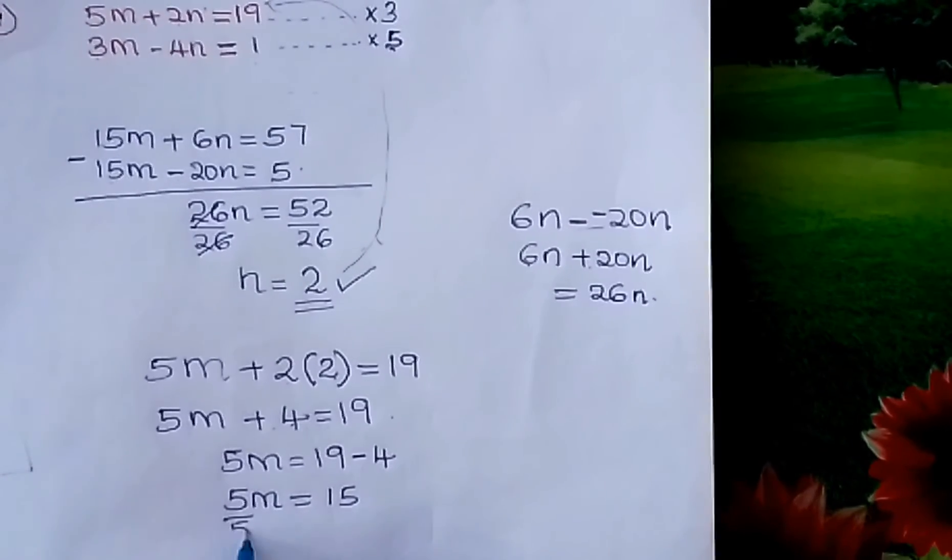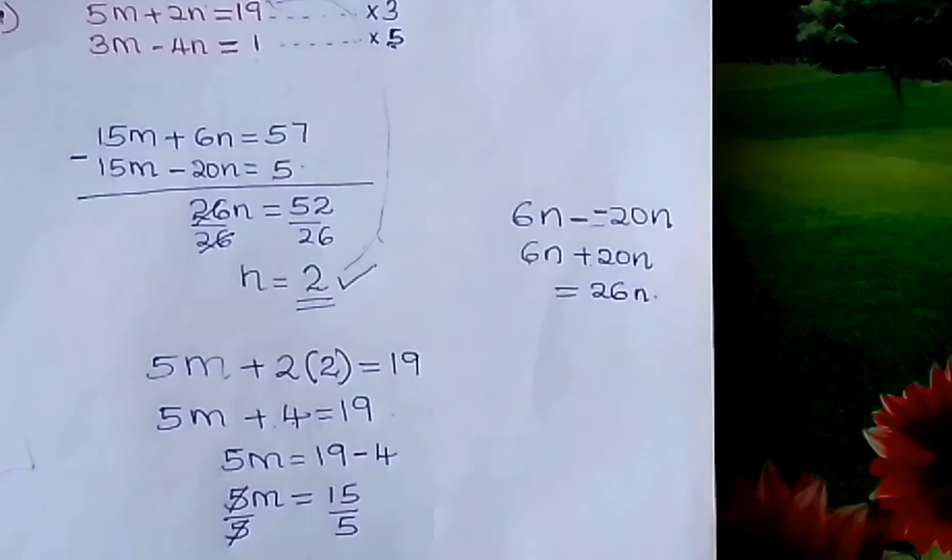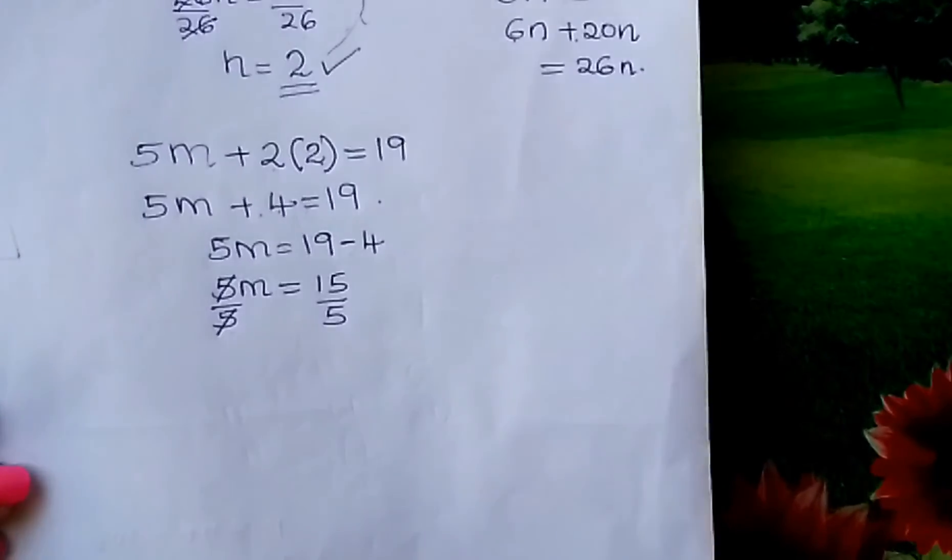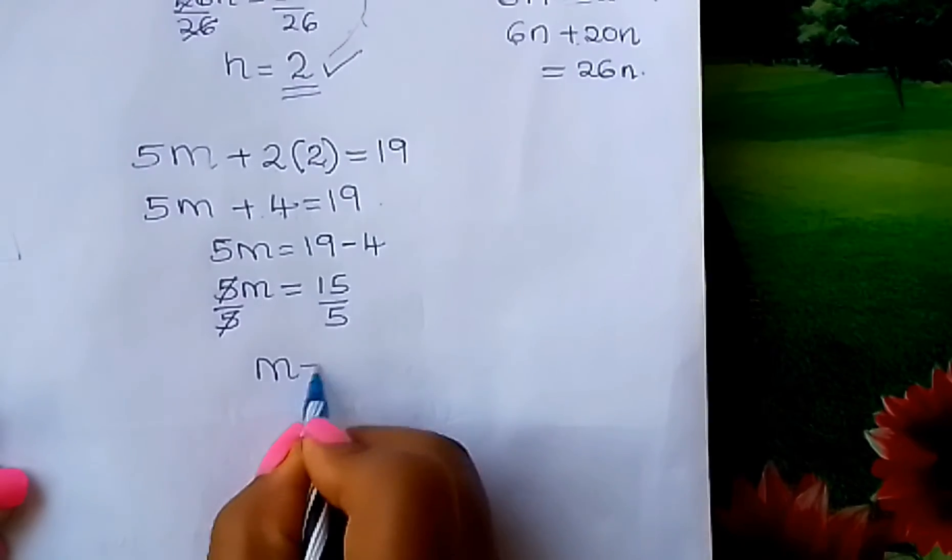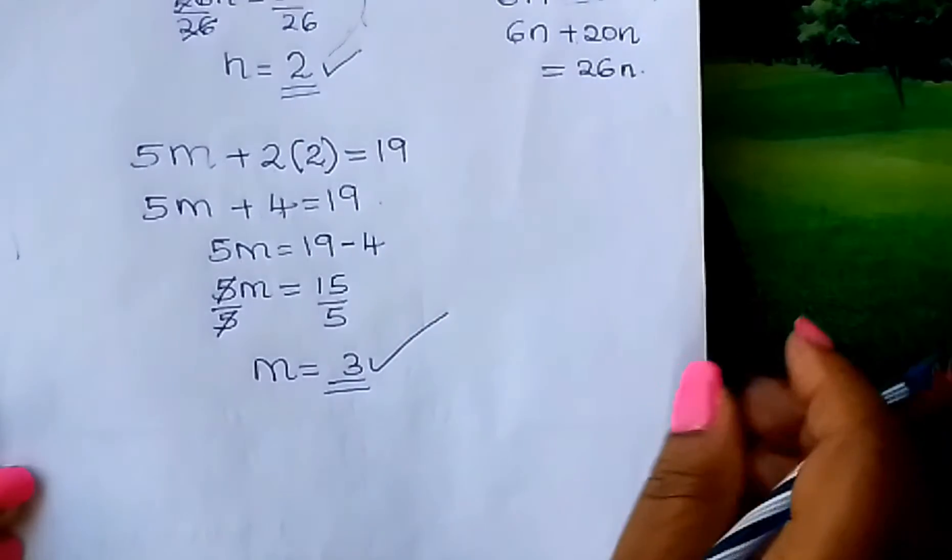What is M? Divide by 5. This will cancel out. And so your M is 3. The value of M is 3.